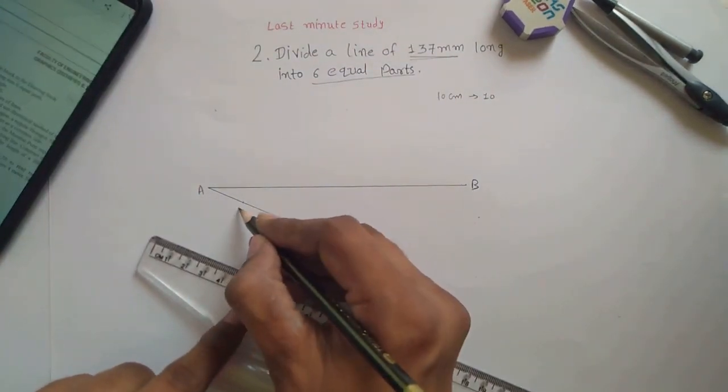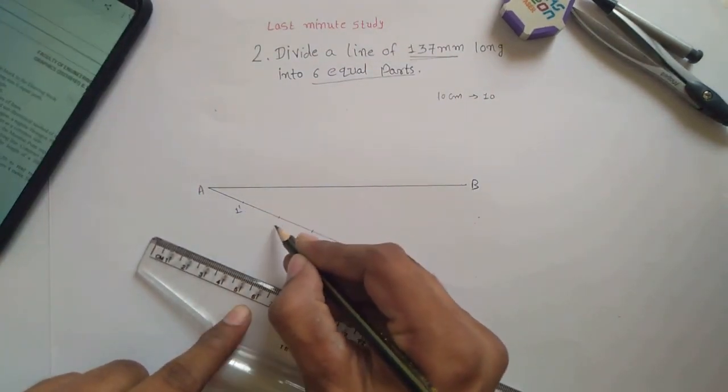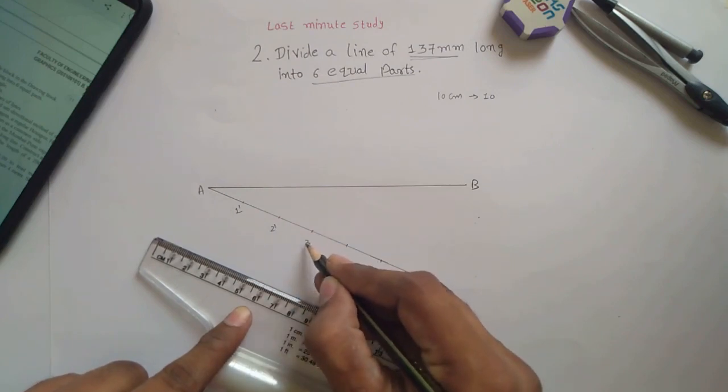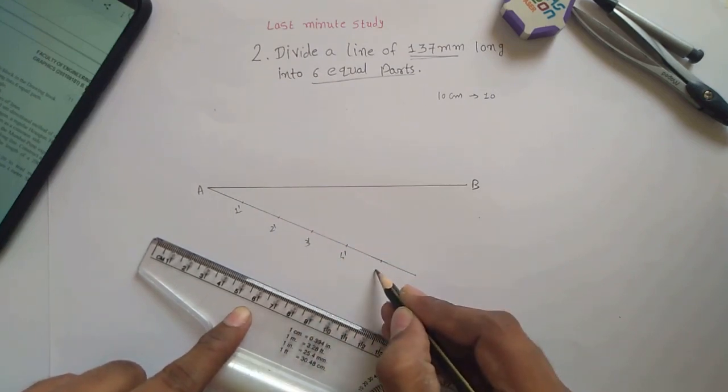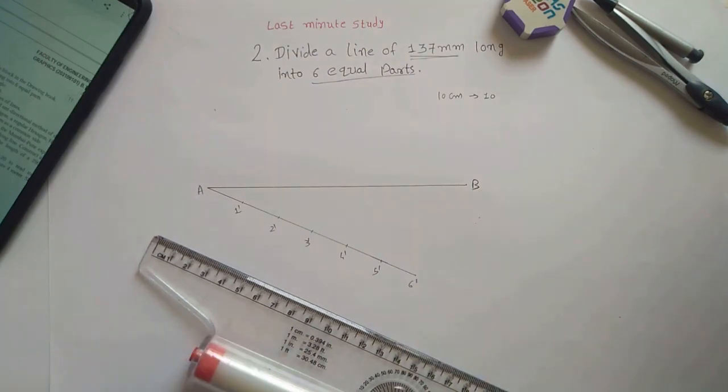Write down the names like 1 dash, 2 dash, 3 dash, 4 dash, 5 dash and 6 dash.